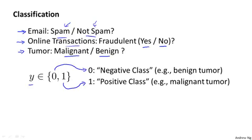But often there is this intuition that the negative class is conveying the absence of something, like the absence of a malignant tumor, whereas 1, the positive class, is conveying the presence of something that we may be looking for. But the designation of which is negative and which is positive is somewhat arbitrary and it doesn't matter that much.